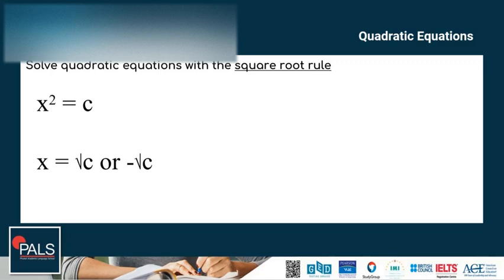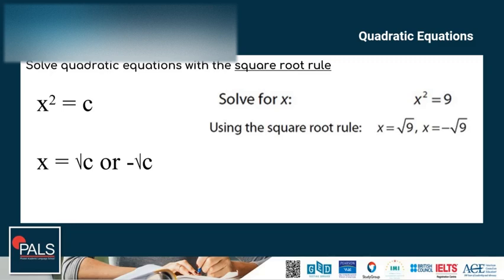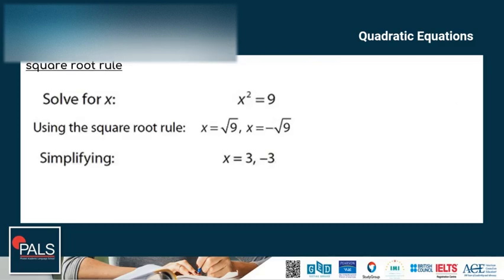Let's try an example. Solve for x: x squared is equal to 9. We use the square root rule when an equation has a single squared term and no other variables. Using the square root rule, we have x is equal to the square root of 9 and x is equal to negative the square root of 9. To simplify, the answer is x is equal to 3 and negative 3.